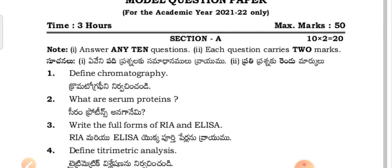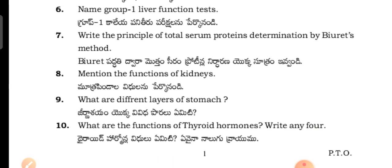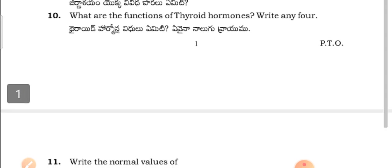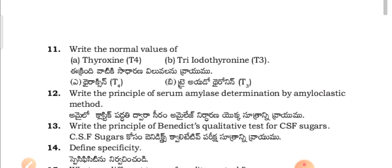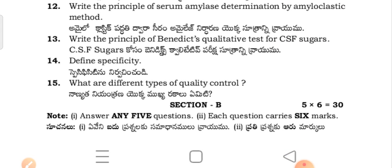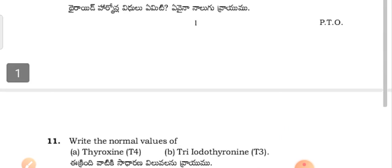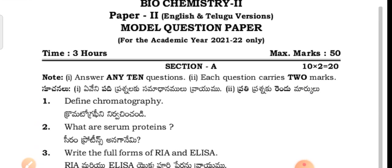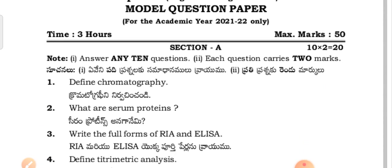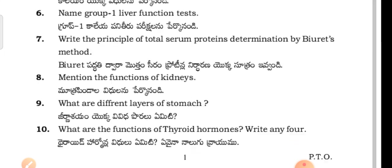For this year's exam, the inter board has released model question papers with 15 questions in Section A, out of which you have to attempt any 10 questions. So 5 questions choice is given.